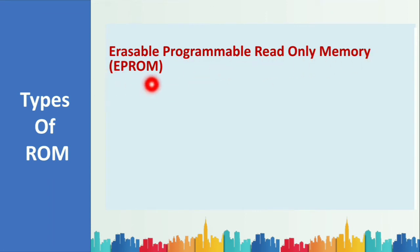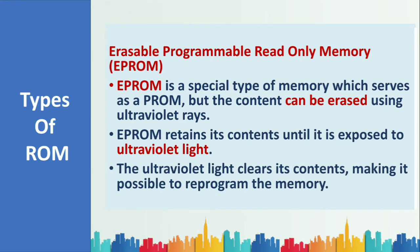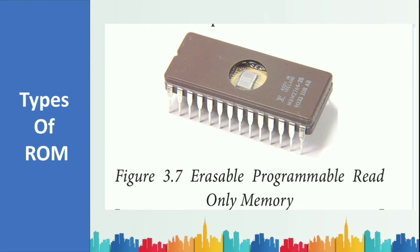EPROM stands for Erasable Programmable Read-Only Memory. It serves as a PROM but the content can be erased using ultraviolet rays. EPROM is manufactured as blank memory; you can program it, and if exposed to ultraviolet light, the content will be erased so you can reuse that chip. Most EPROM chips have a transparent area at the top covered with a sticker to prevent accidental erasure by sunlight.